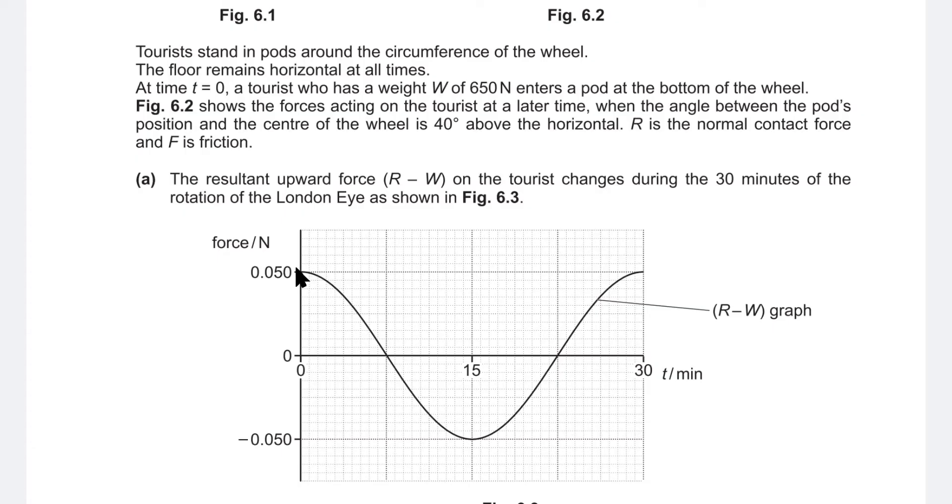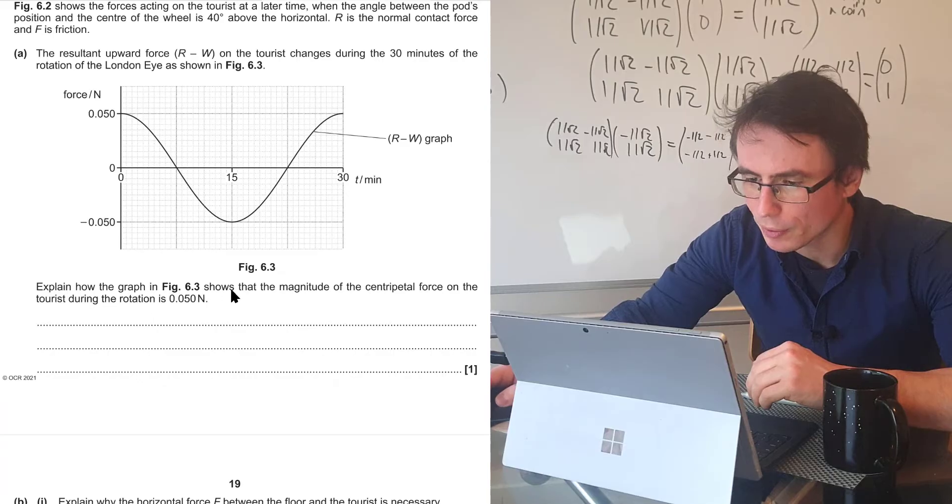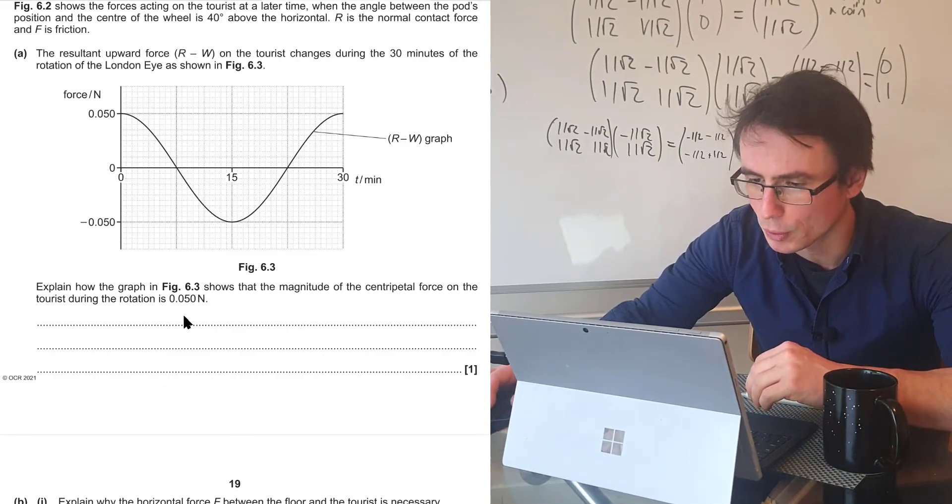The figure below shows a variation of the resultant upward force, R takeaway W, and we can see how it varies over the 30-minute ride. First question, explain how the graph in figure 6.3 shows the magnitude of the centripetal force on the tourist during rotation is 0.050 newtons.